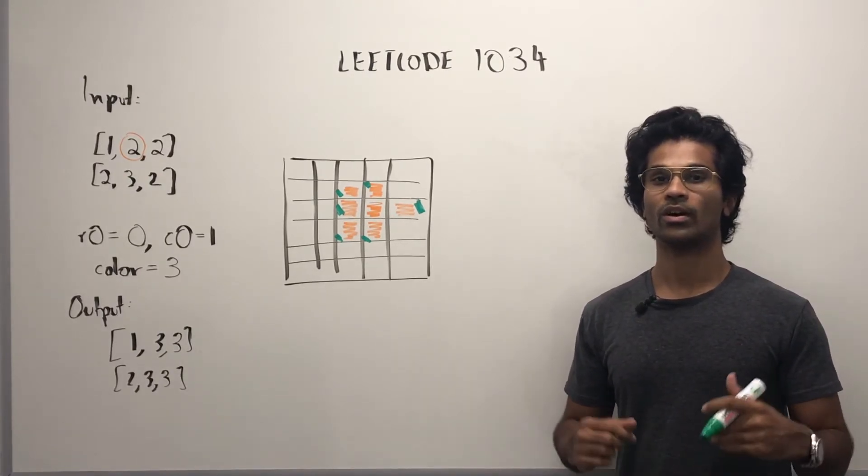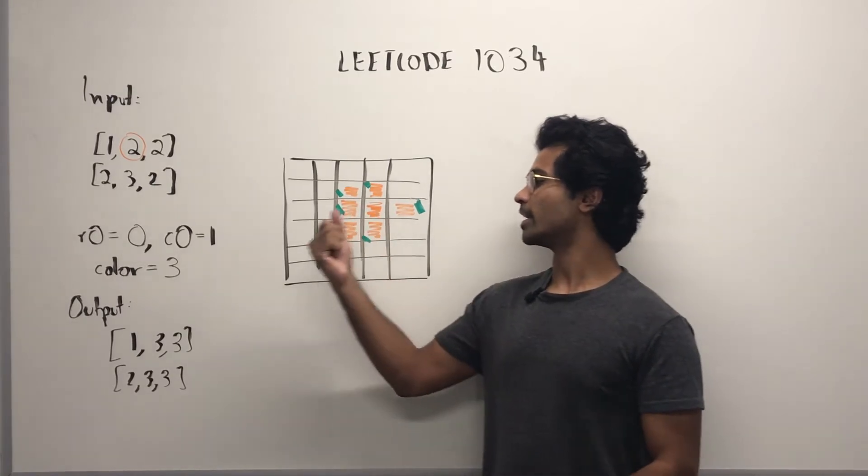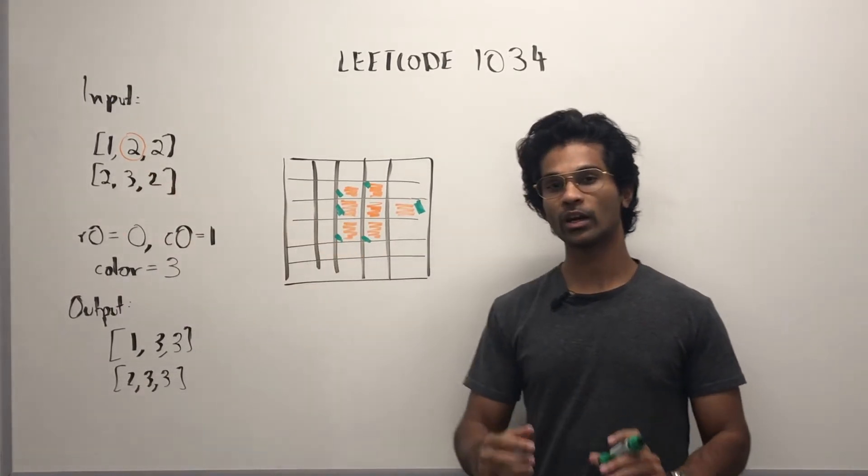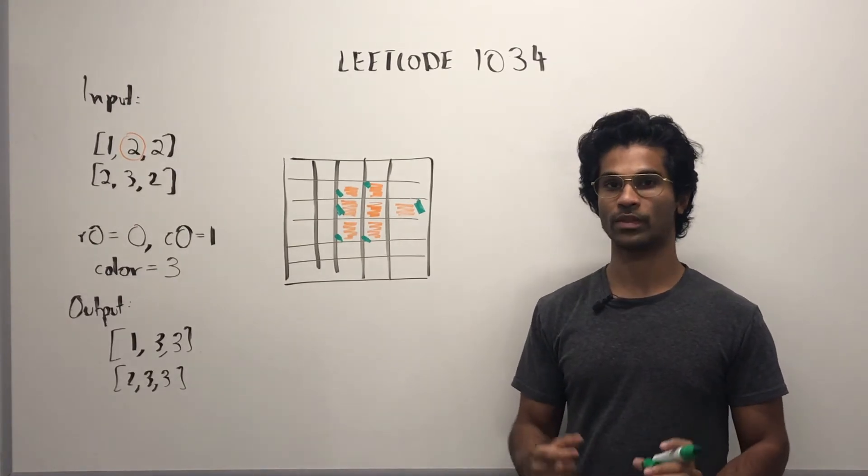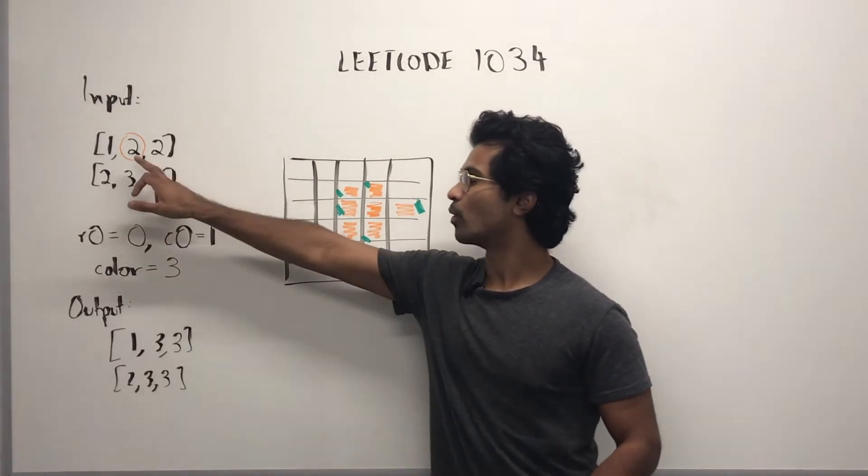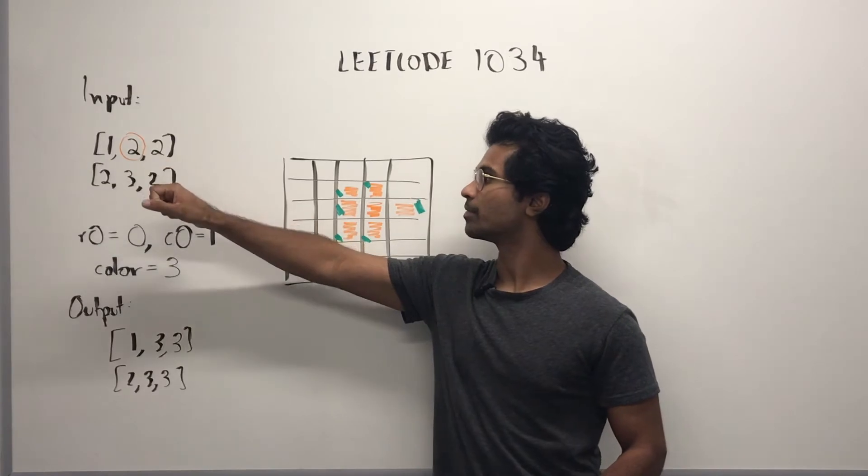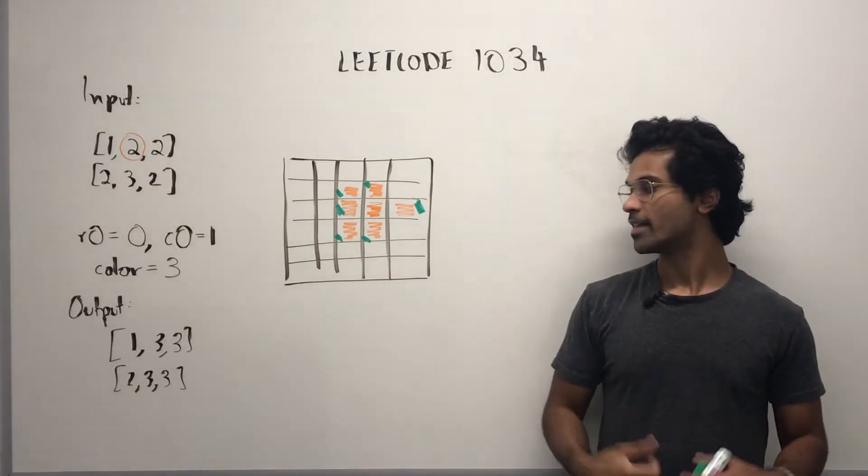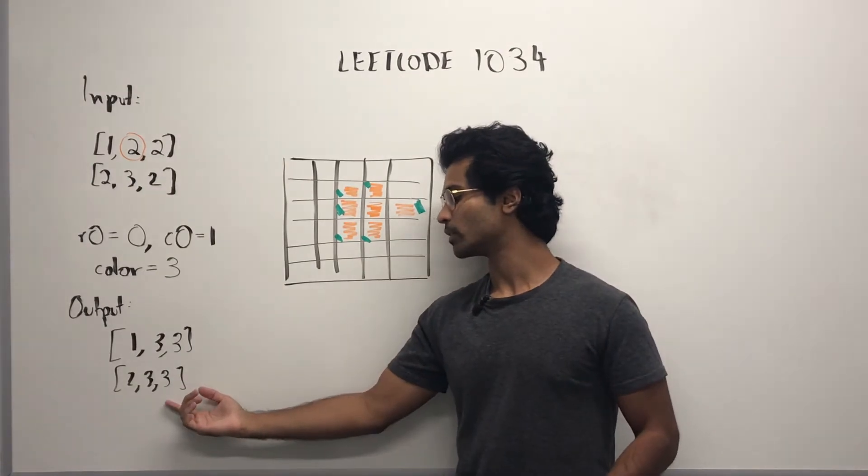So, now let's see if that makes sense. We take the color 3, we go here, and we're going to color every border node the color 3. So, this is on the edge of the grid, this is on the edge of the grid, and this is also on the edge of the grid. That's how we have an output of 1-3-3 and 2-3-3.